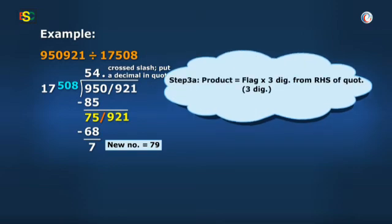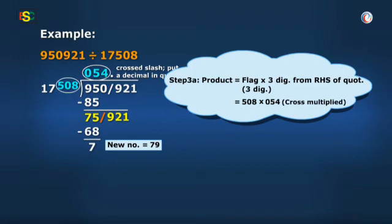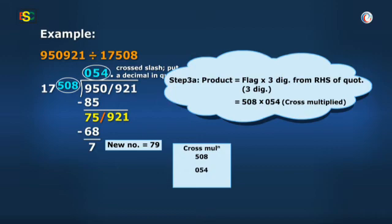Going further, now cross multiplying 508 by 054. Of course, I remember to add a 0 before quotient 54. I get 20 plus 0 plus 0 equal to 20.